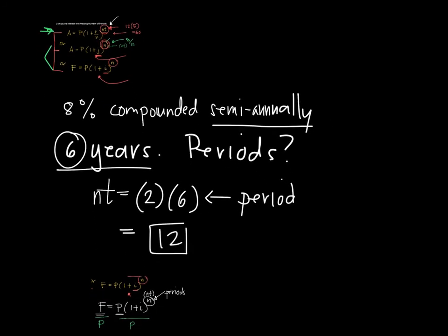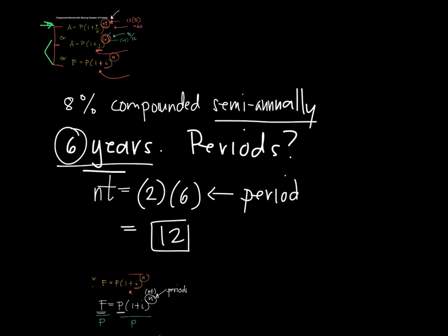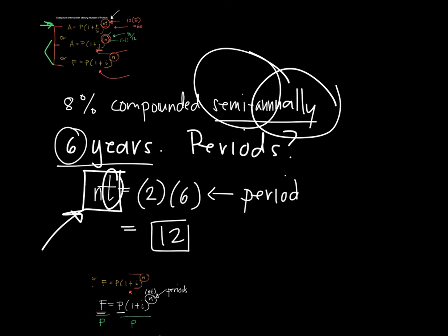So, always remember the number of periods is simply NT. You use this when you are given the N, number of times it is compounded semi-annually and the number of years that it will run, so 2 times 6. So, we have 12, so we have 12 periods in all.